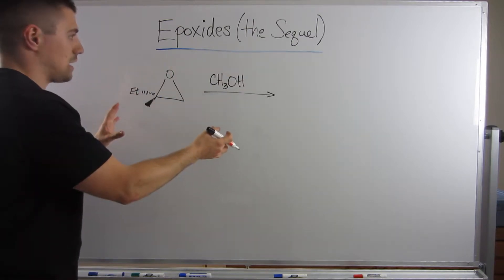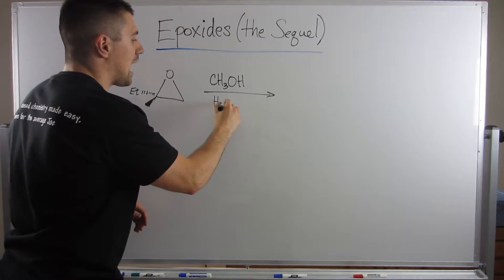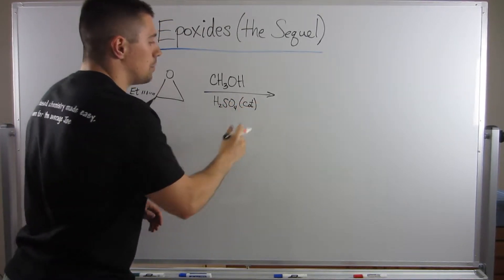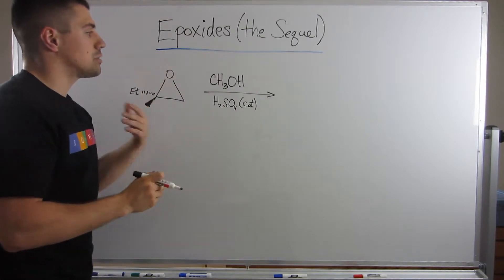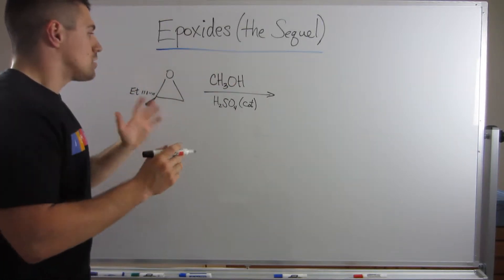All right, so in this scenario right here, we have the CH3OH. You might even see some catalytic acid, something along these lines. But even if that wasn't there, we would assume acidic conditions because we've got something protic going on.